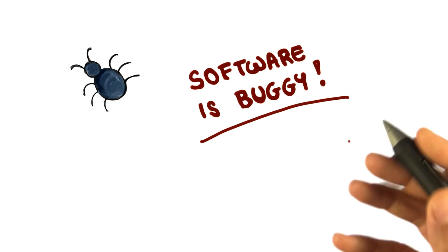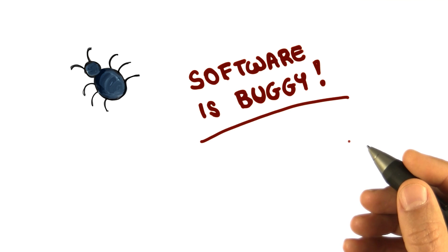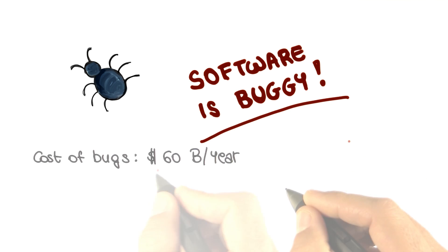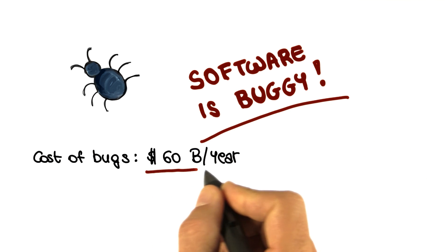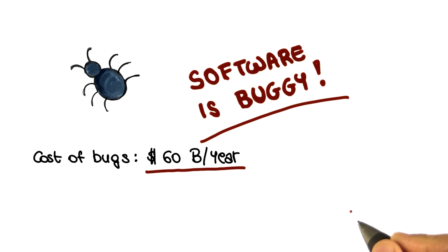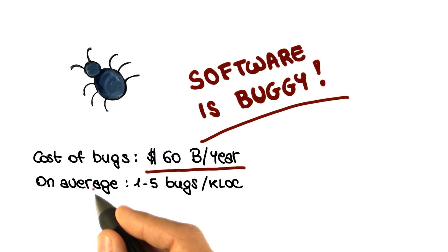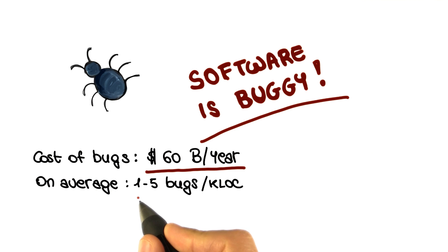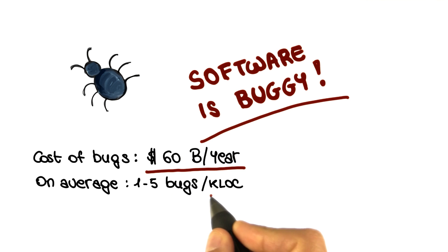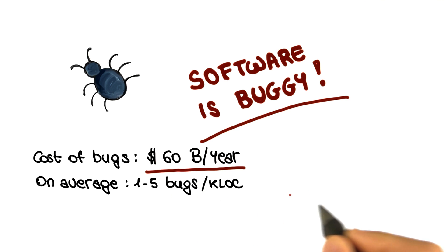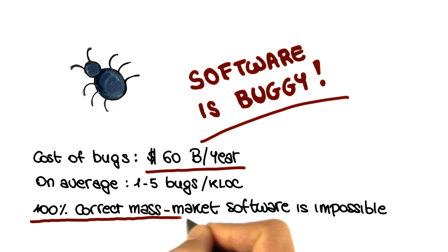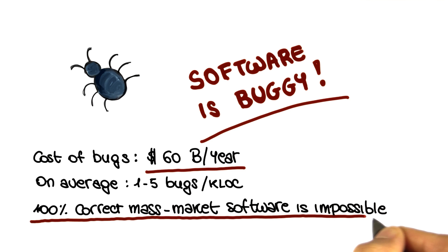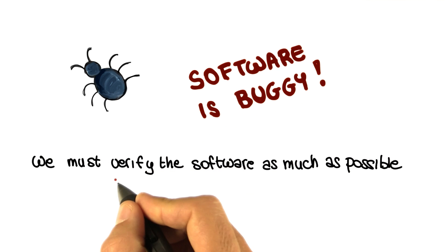In fact, a federal report from a few years ago assessed that software bugs are costing the US economy $60 billion every year. In addition, studies have shown that software contains on average one to five bugs every thousand lines of code. Building 100% correct mass market software is just impossible. And if this is the case, what can we do?